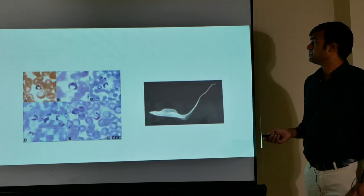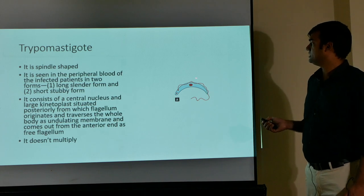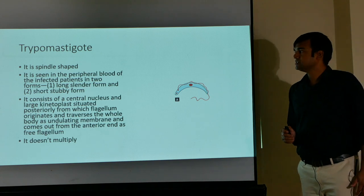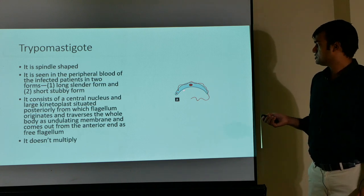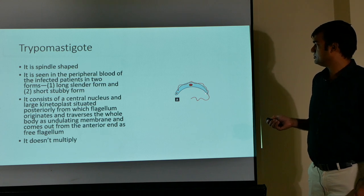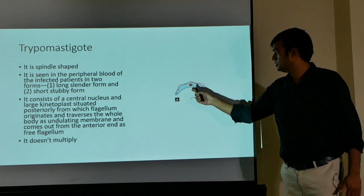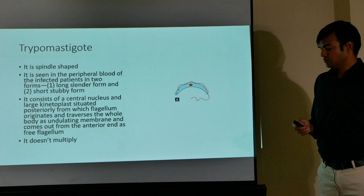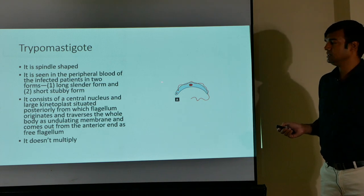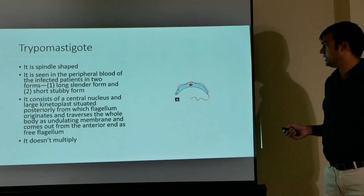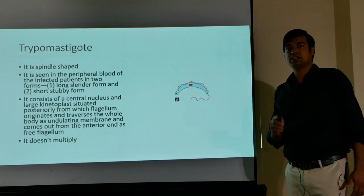The trypomastigote is the main form — it is spindle-shaped and is seen in the peripheral blood of infected patients in two forms: a long slender form and a short stubby form. It has a central nucleus and a large kinetoplast situated posteriorly, from which a flagellum originates, traverses the entire body as an undulating membrane, and exits from the anterior end as a free flagellum. This form does not multiply — often asked as a multiple choice question.